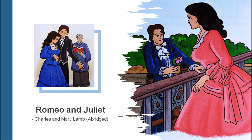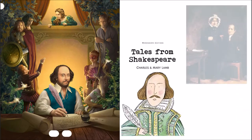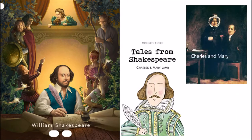Romeo and Juliet is a play by William Shakespeare. This story has been abridged by Charles Lamb and Mary Lamb, who were siblings.